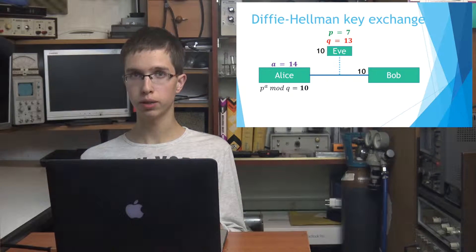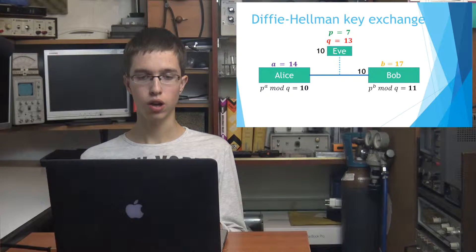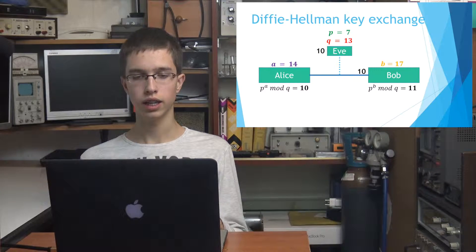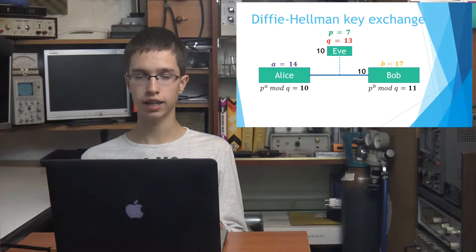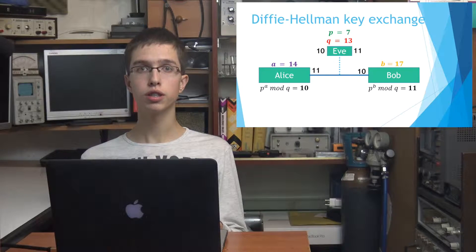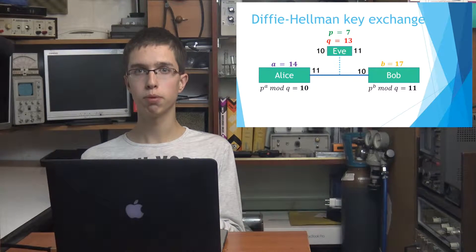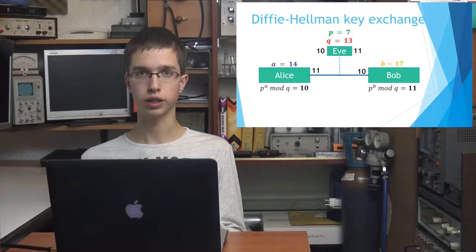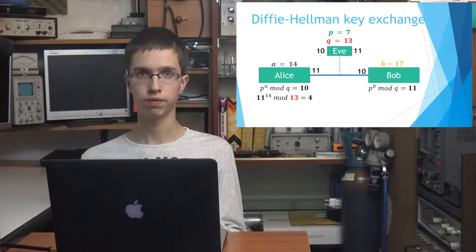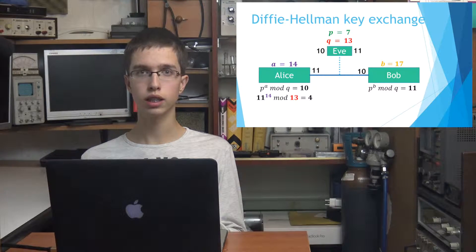Then, Bob chooses his private number — say b is equal to 17. Then he does modular exponentiation of p to the power of b modulo q, which is 7 to the power of 17 modulo 13, equal to 11. This 11 is sent publicly so that anyone, including Eve and Alice, can get it. Finally, came the most interesting part. Alice takes Bob's public number, 11, and raises it to the power of her own private number, 14, and does the modular arithmetic with q equal to 13. So we have 11 to the power of 14 modulo 13, equal to 4.